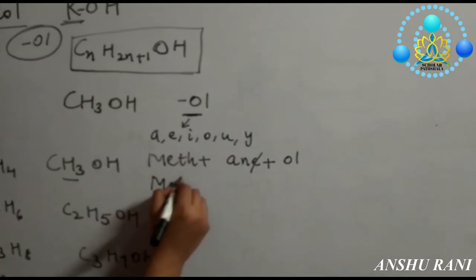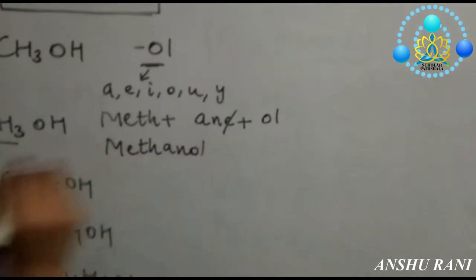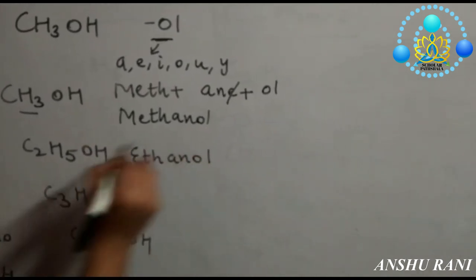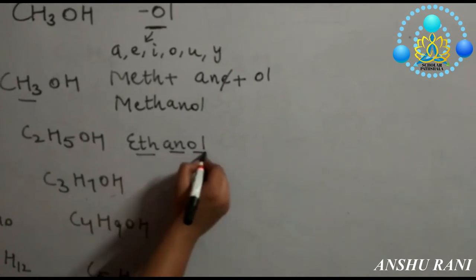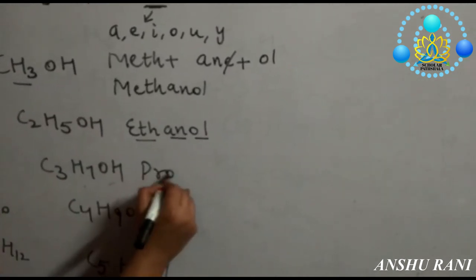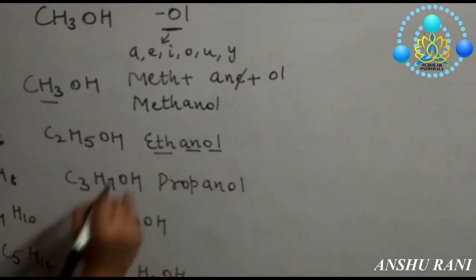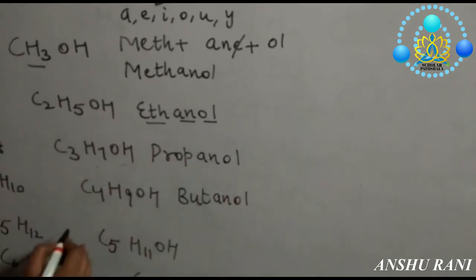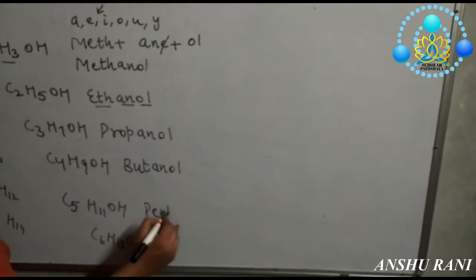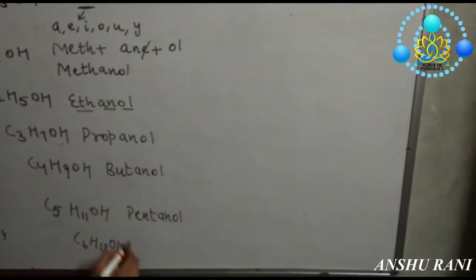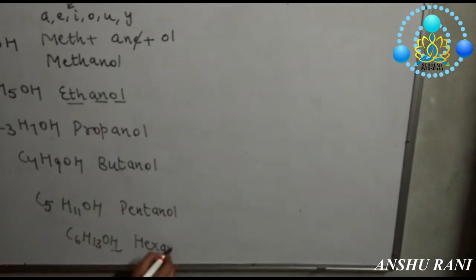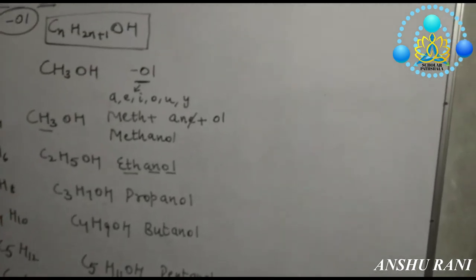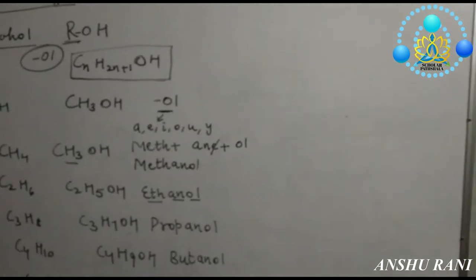The name will be methanol. Similarly it would be eth plus ane plus ol: ethanol. Prop plus ane plus ol: propanol. Butane plus ol: butanol. Pentane plus ol: pentanol. Hexane plus ol: hexanol. This is your first functional group: alcohol. You can write the names in this sequence.